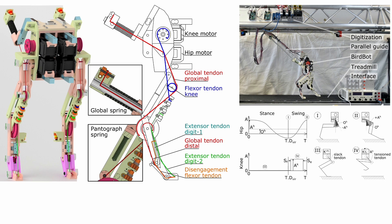BirdBot is instrumented with force, torque, current and position sensors. The robot is walking on a treadmill and is guided in plane by a parallel mechanism mounted to a slider. A central pattern generator produces feed-forward trajectories for hip and knee motors during walking.